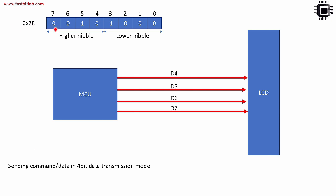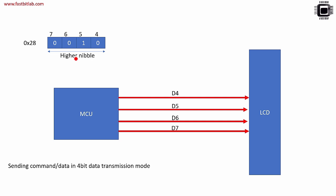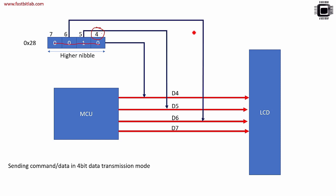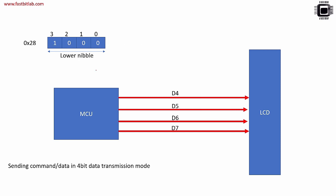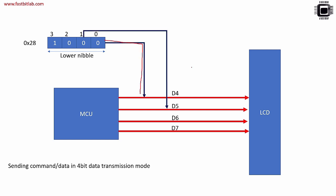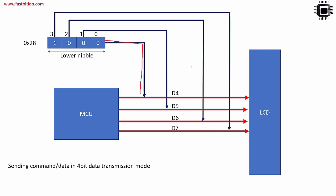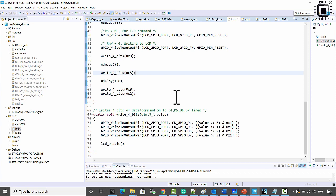Let's say your command code is 0x28. This is the binary format of that, and this shows the connection between the MCU and the LCD where four lines D4 to D7 are used. First you send the higher nibble: bit 4 on D4 line, bit 5 on D5 line, bit 6 on D6 line, and bit 7 on D7 line. After that you send the lower nibble: bit 0 on D4, bit 1 on D5, and so on for D6 and D7.